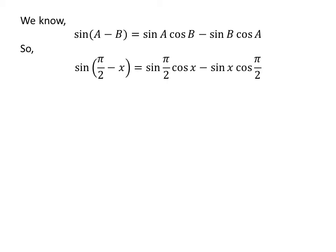Let's apply the above identity for sin of half of pi minus x. Here, A is half of pi and B is x. So sin of half of pi minus x is equal to sin of half of pi times cosine of x minus sin of x times cosine of half of pi.